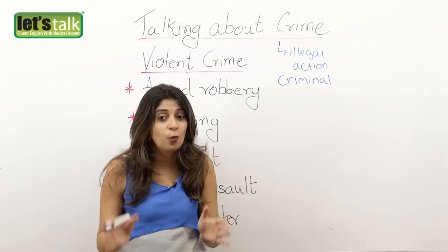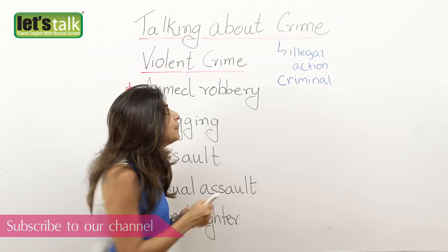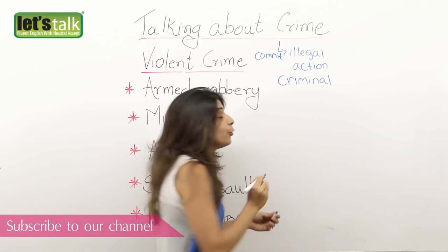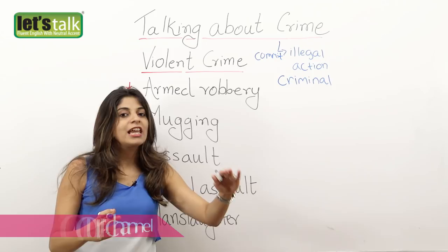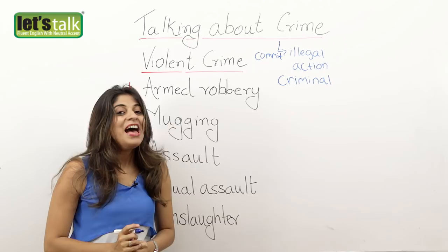Now remember, you never use the word 'crime' as a verb. You would never say 'he crimes' or 'she crimes' — that is completely incorrect. You use the verb 'commit,' which collocates with the word 'crime.' So you say 'she committed a crime' or 'this person commits a crime.' Commit is the verb you are supposed to use.